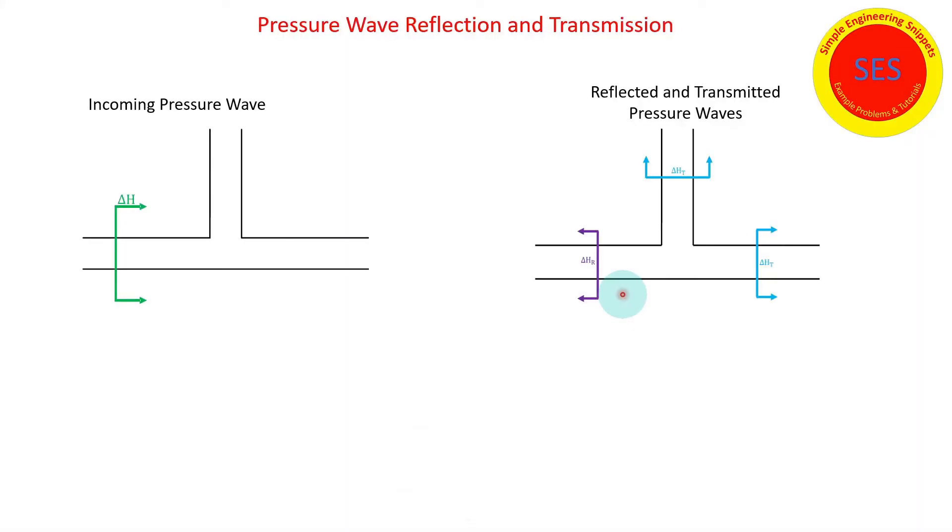In a previous video we looked at the exact same situation where we had incoming wave to a multi-pipe junction and we were able to calculate the magnitude of the transmitted waves in the downstream pipes and the reflected wave that travels back up the pipe with the incident wave.